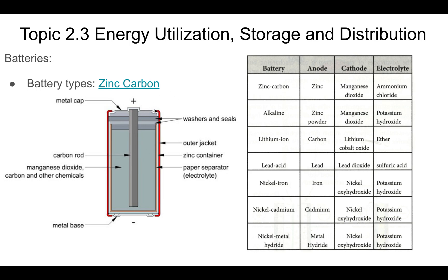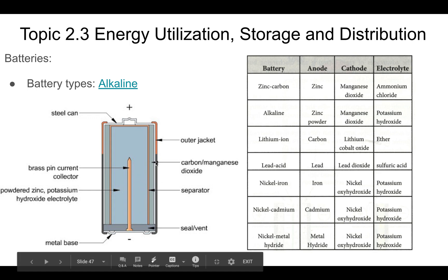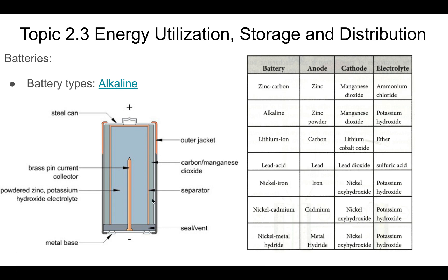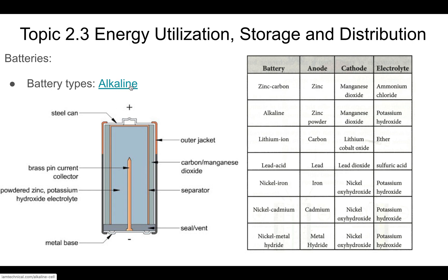Alkaline batteries are the ones you'd also typically find in AA and AAA sizes for consumer electronics, but these can be recharged — not always, but they can be. The anode is zinc powder inside the battery, and the cathode is manganese dioxide. This type of battery is typically recyclable, and you can read more about it in the linked article.